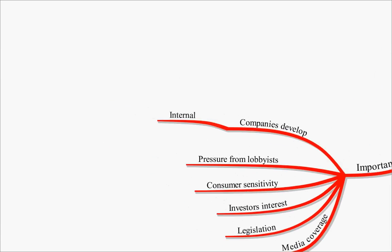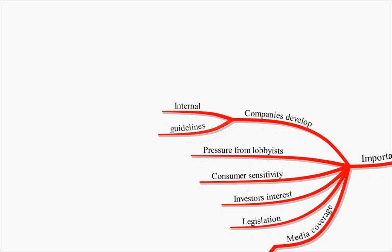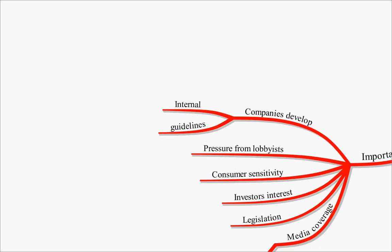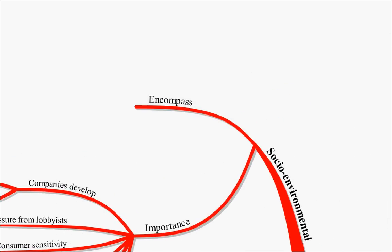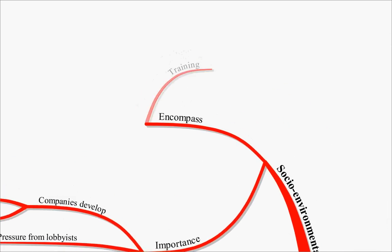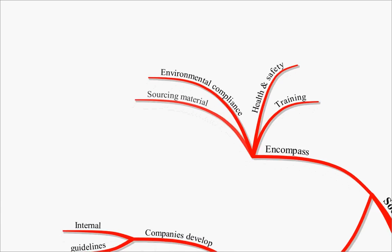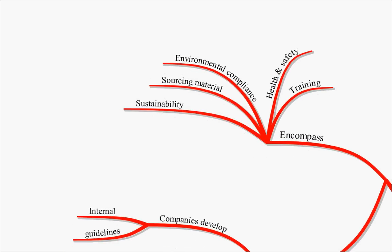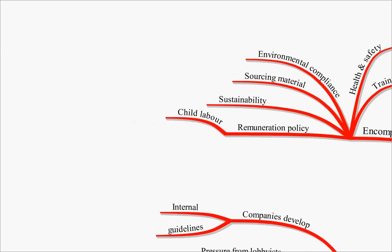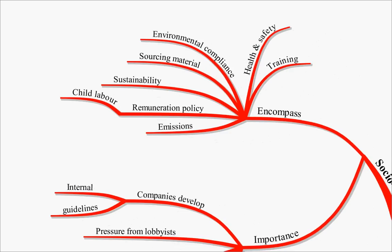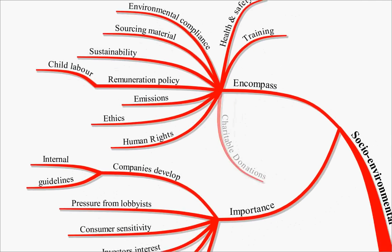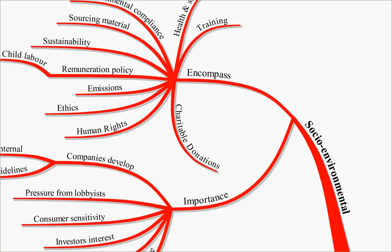Companies develop internal guidelines that they must adhere to, and this means that maybe you have to come in and say, did they actually adhere to the guidelines that they've set out for themselves. Socio-environmental audits may encompass many different areas: the training of employees, health and safety, environmental compliance, sourcing of materials, sustainability of your sources, remuneration policy, child labour policies in different countries, admissions policies, ethics, human rights, and charitable donations.